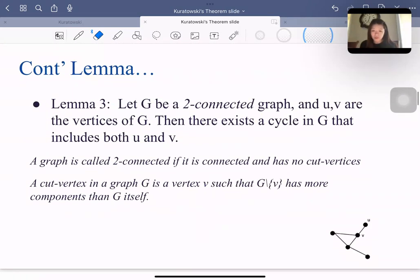Lemma 3: Let G be a 2-connected graph, and u, v are the vertices of G. Then there exists a cycle in G that includes both u and v. And what is a 2-connected graph?